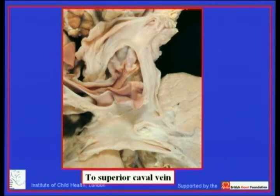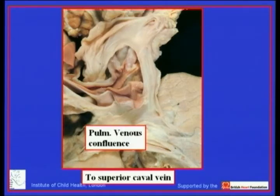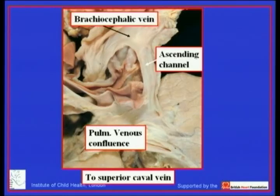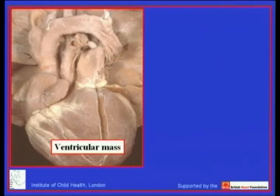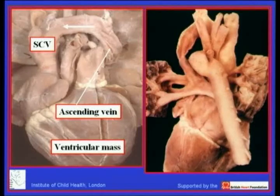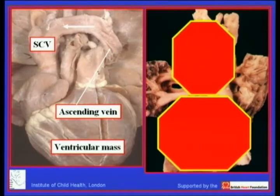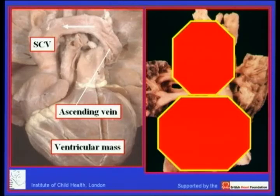For totally anomalous pulmonary venous connection, here is a supracardiac example with connection to the superior caval vein, demonstrated after performing the Taussig maneuver displacing the heart from the pericardial cavity. We see the pulmonary venous confluence with an ascending channel joining the brachiocephalic vein to the superior caval vein. The combination of the ventricular mass and the anomalous venous channel creates a snowman appearance on posterior view — previously called a cottage loaf arrangement in the UK, though the snowman description is now more universally understood.